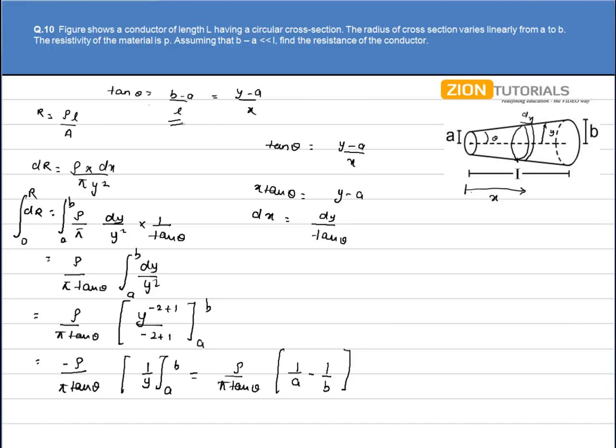As tan theta equals (b-a) by L, we get ρ divided by π times (b-a) by L, and solving this bracket we have (b-a) upon ab. These two cancel, so the answer comes out to ρL by πab. That is our answer.